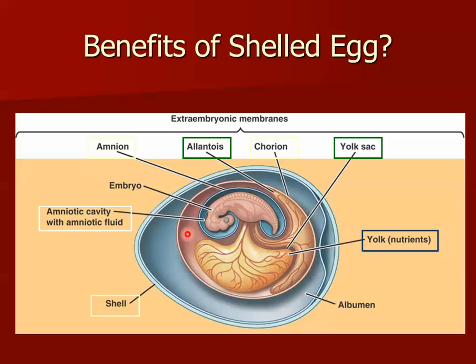And then there's the yolk sac, which is more vestigial in humans, but especially in birds and reptiles, the yolk sac contains a food source. So all amniotes — which include reptiles, birds, and mammals — the embryo develops surrounded by these four extra-embryonic membranes: the amnion, the chorion, the allantois, and the yolk sac.